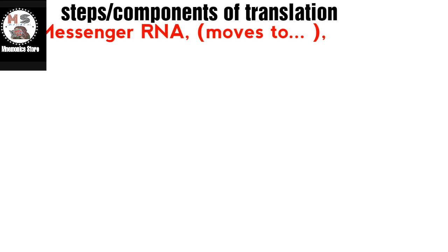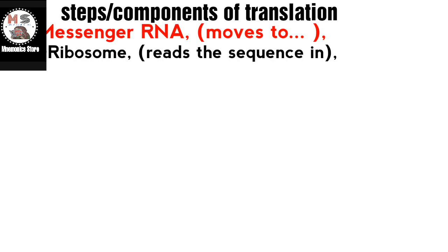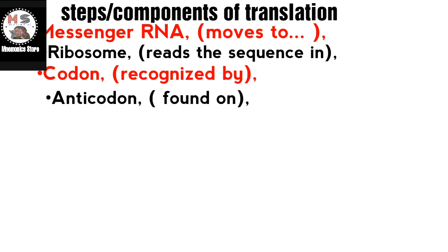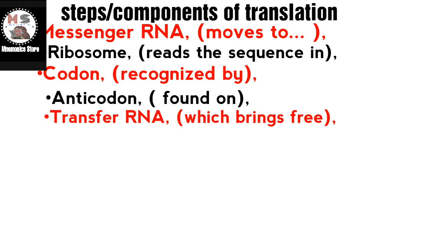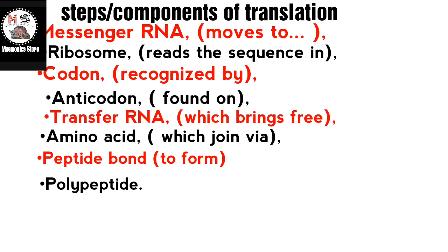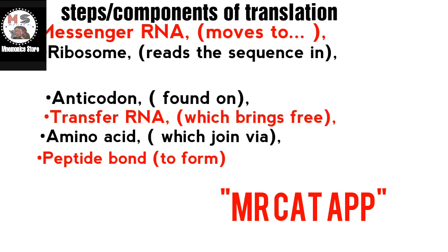Messenger RNA moves to ribosome. Ribosome reads the sequence in codon. Codon recognized by anticodon. Anticodon found on transfer RNA. Transfer RNA which brings free amino acid. Amino acid which joined via peptide bond to form polypeptide. Now by taking the first letters you get a mnemonic: Mr. Cat App.